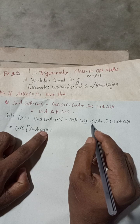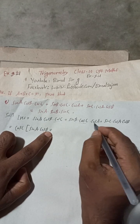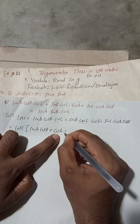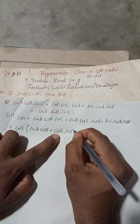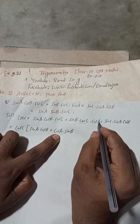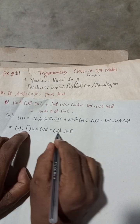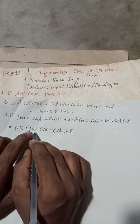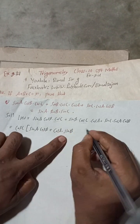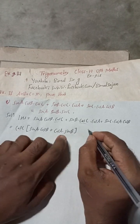After taking cos C as common, we have sine A cos B plus cos A sine B. This is exactly the formula format for sine(A+B), so we can write this as cos C times sine(A+B).